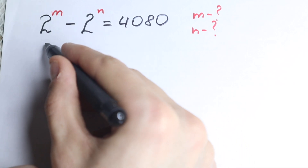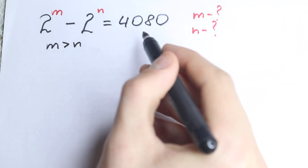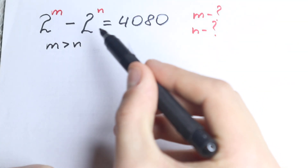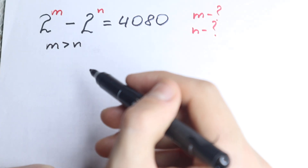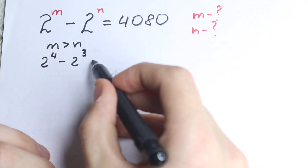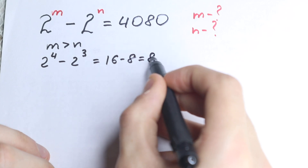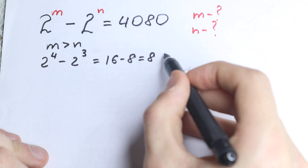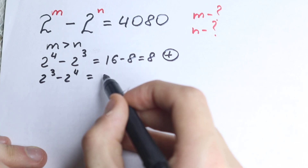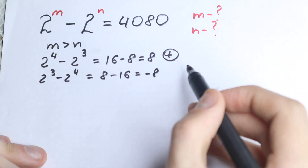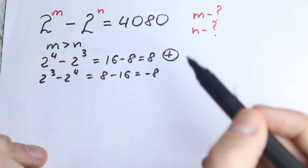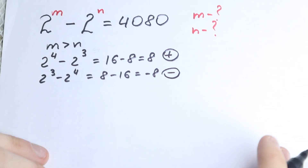First of all, I want to mention that m is greater than n. This is the first obvious step because we have a positive expression on the right hand side. So m is greater than n, and 2 to the power m is greater than 2 to the power n. For example, if we have 2 to the power 4 minus 2 to the power 3, we get 16 minus 8, which is positive, and 4 is greater than 3. But if we had 2 to the power 3 minus 2 to the power 4, we'd get 8 minus 16, which is minus 8. So if the right hand side is positive, the first power must be greater than the second.